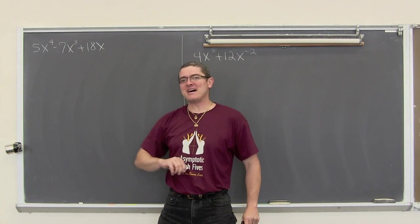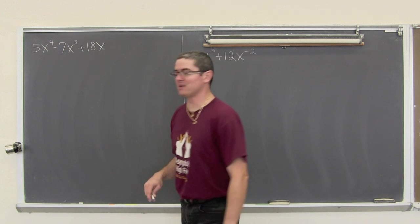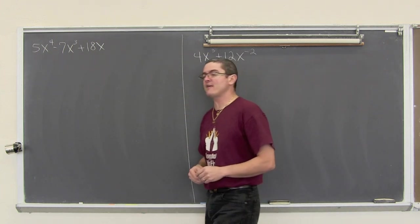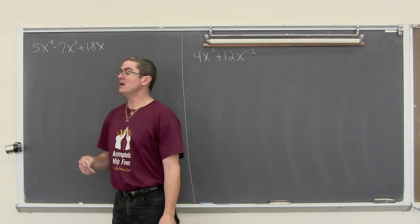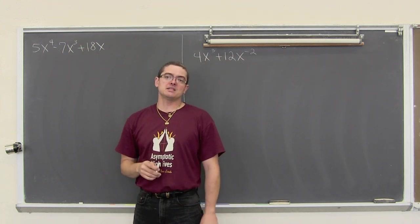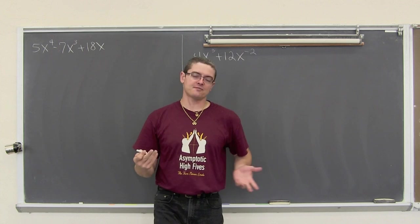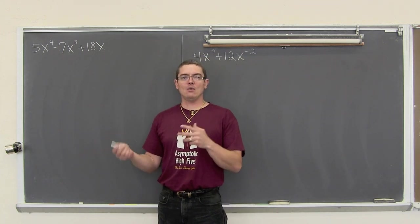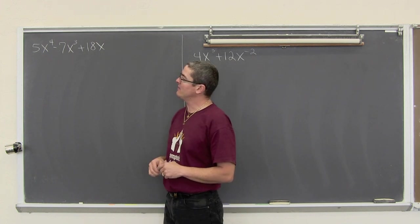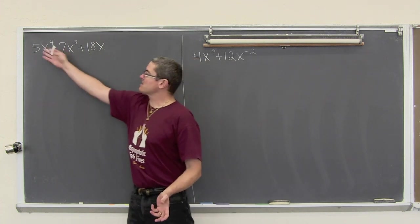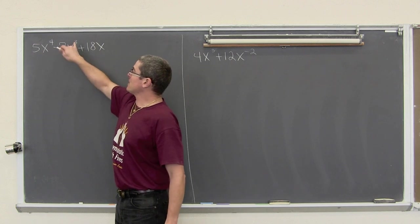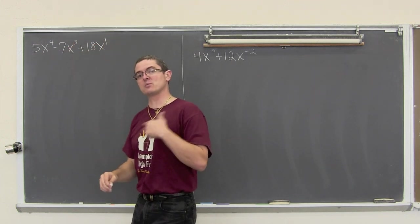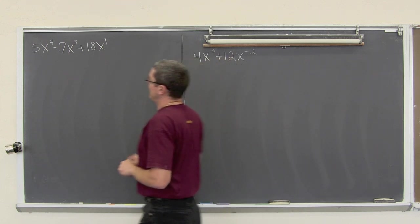Alright. 5x to the fourth minus 7x cubed plus 18x. Now, with this example, I don't have any common factors between 5 and 7. They are both prime. And neither one of those numbers is going to 18. I just don't want you to think you can always factor out a number and a variable. So, 5, 7, and 18 do not share any common factors. However, all three terms have an x in them. So, I can take an x out of all three. This has four to give up, three to give up, and only one to give up. So, that is what we are going to take out. So, we have x.